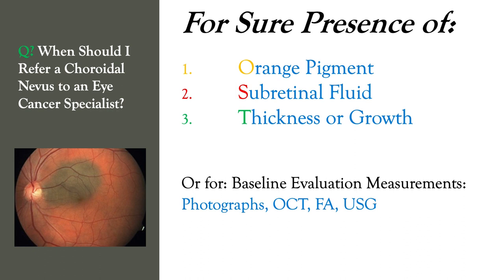Well, if you see orange pigment, or subretinal fluid, thickness, or growth — for sure, you can get a consultation. However, if you just want baseline evaluation measurements with photographs, OCT, fluorescein, and ultrasound by someone who looks at these lesions all the time, it's okay to send them.